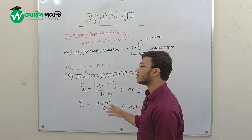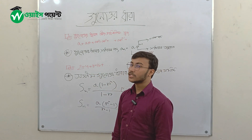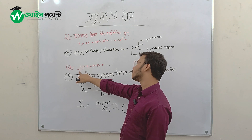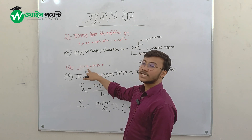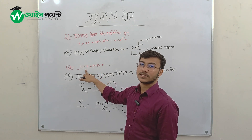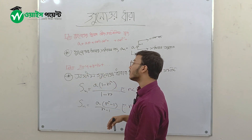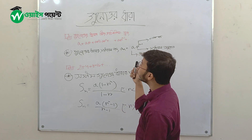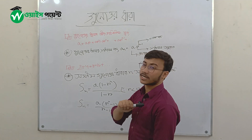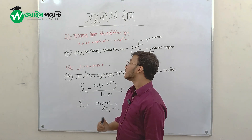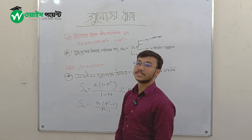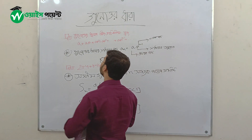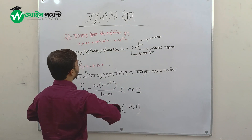In each consecutive pair of terms, dividing a term by the previous one gives the same result. 4 divided by 2 equals 2. 8 divided by 4 equals 2. In every consecutive pair, we get the same answer — a constant common ratio. So if you divide the second term by the first term, what do you get?